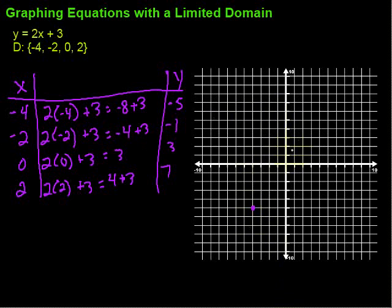Next one, negative 2, negative 1. So back 2, down 1, puts me right there. Then we go to 0, 3. So 0, up 3. And finally we go to 2, 7. So over 2, that was 3, so 4, 5, 6, 7. Puts me right there.